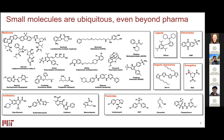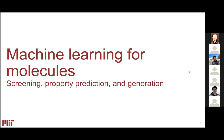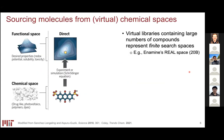For machine learning and molecular discovery, I want to touch on a few preliminaries. We'll talk about screening to identify good compounds, which connects us to property prediction and ultimately to molecular generation. One classical way to find good structures is to search within an enumerated space of possible candidates — a classical virtual screening setting with direct querying of some property prediction.